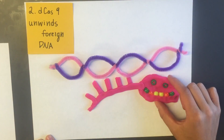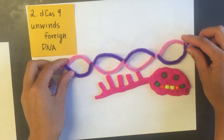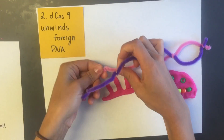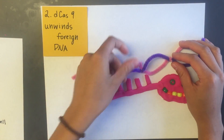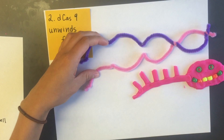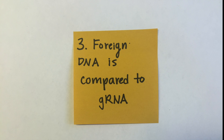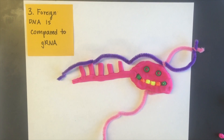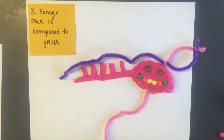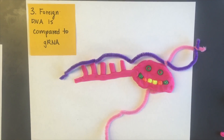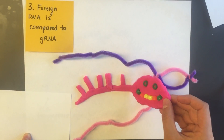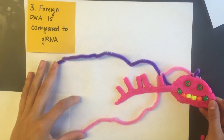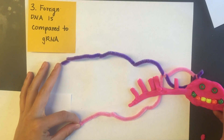D-Cas9 encounters the foreign DNA and unwinds it. D-Cas9 compares the unwound DNA to the guide RNA that comes with it. If it does not find a complementary sequence, then it simply continues to read the DNA.